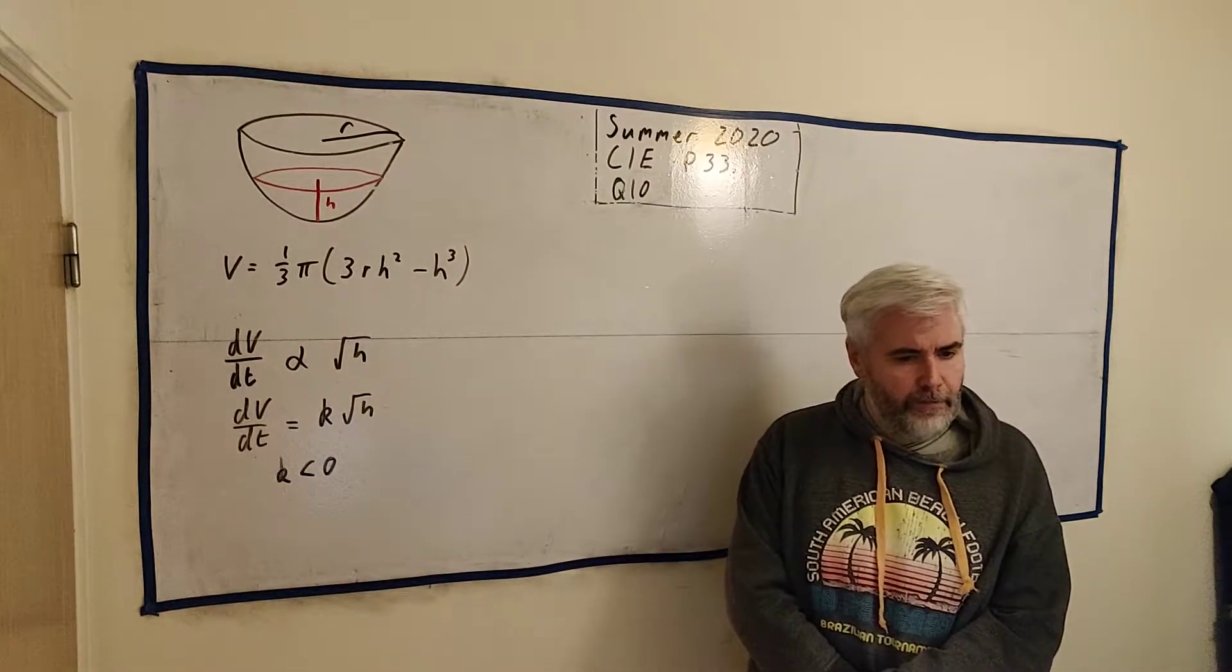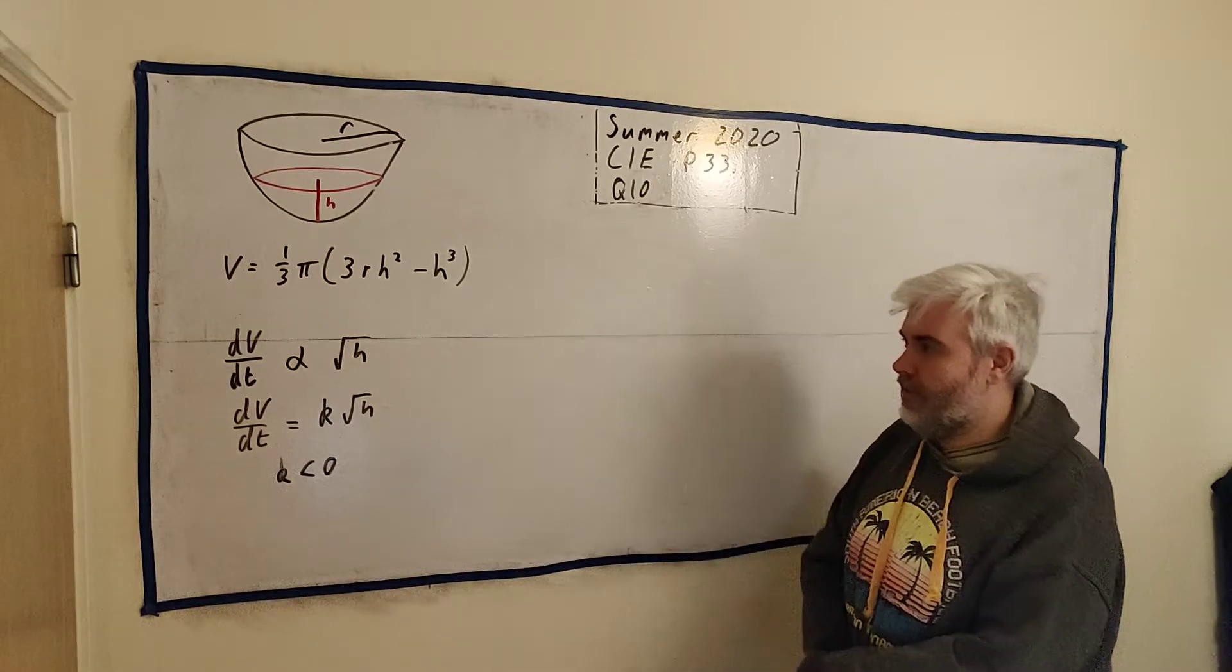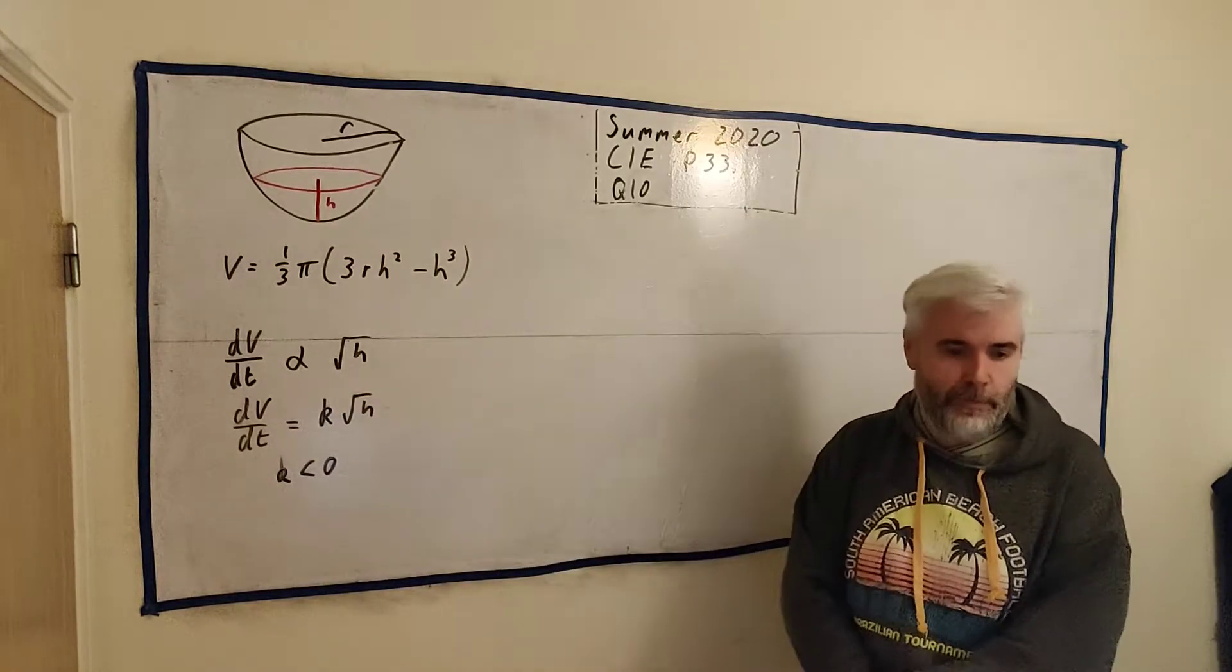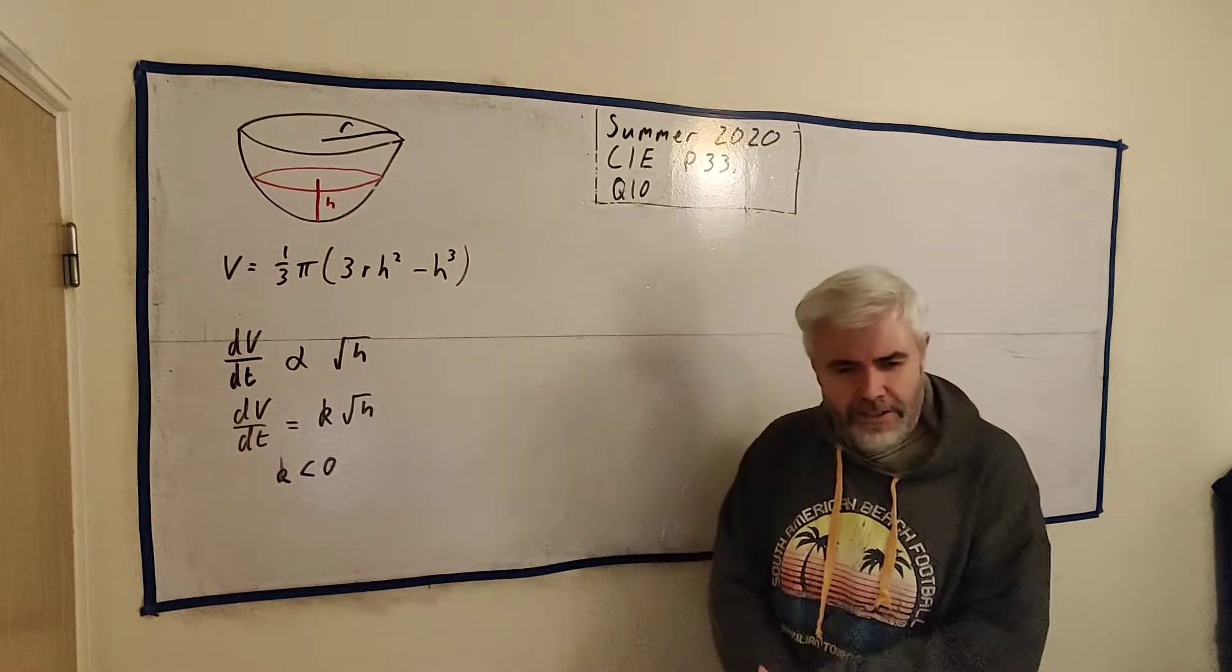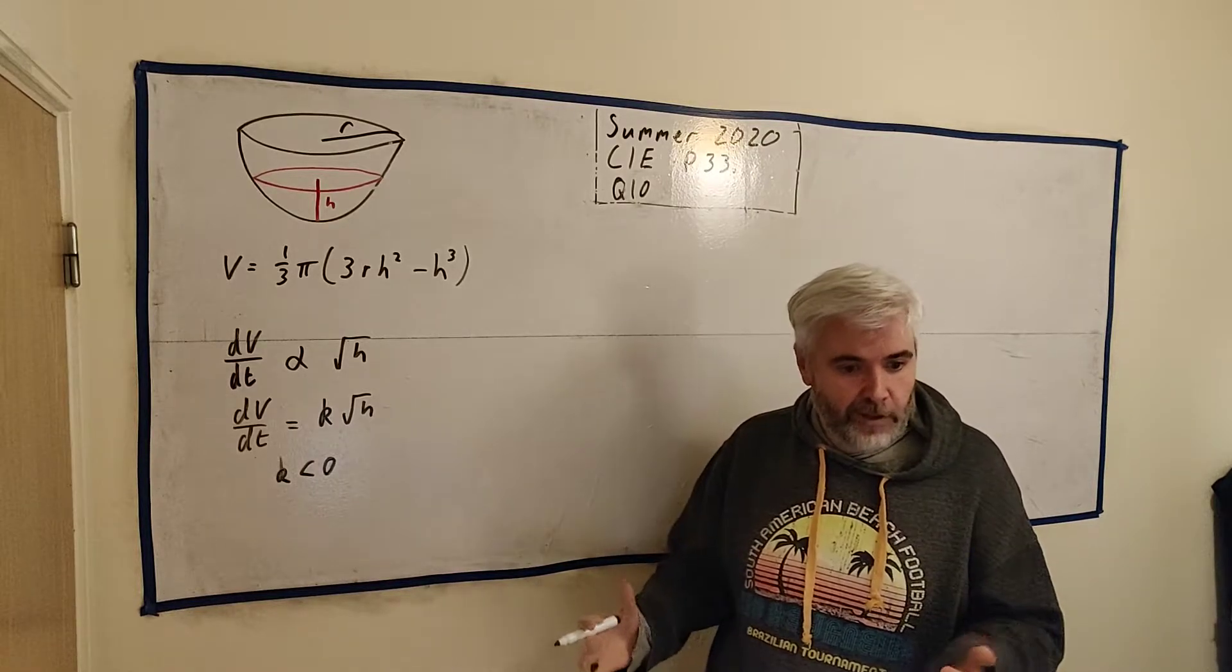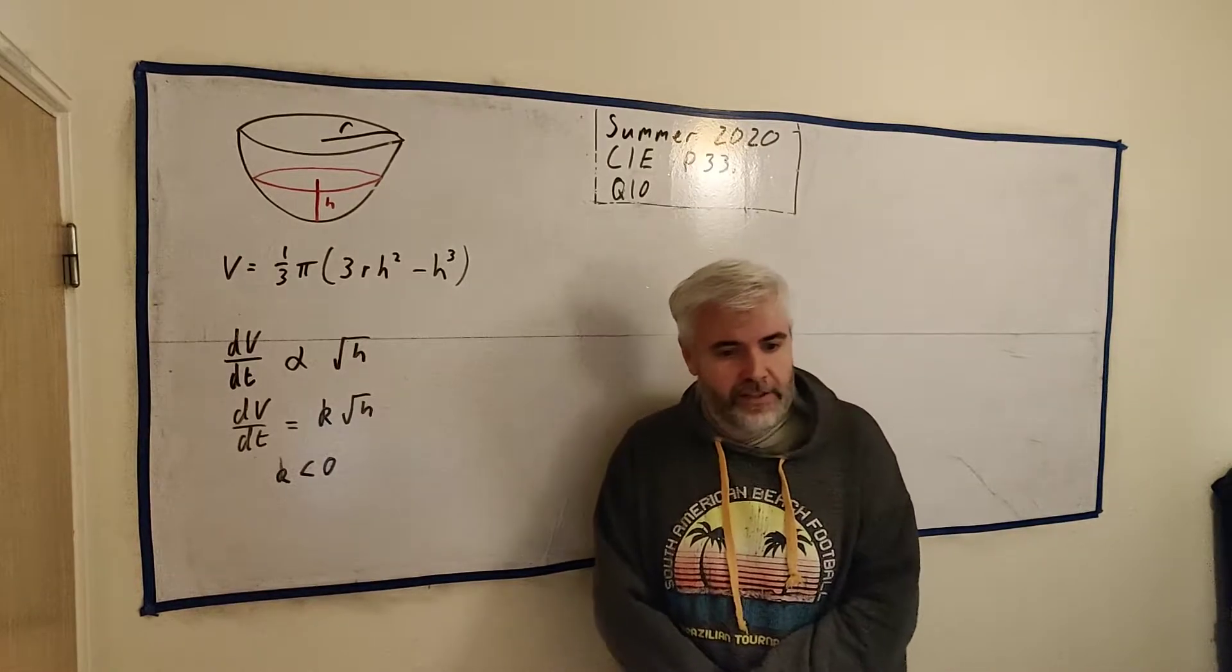I think that's enough information for us to start this question, but you did need to invent this part. This line here is going to be fairly important. Part 1, they asked us to find dh/dt. That's quite hard for people. We have no formula for h, so we can't just differentiate it with t.